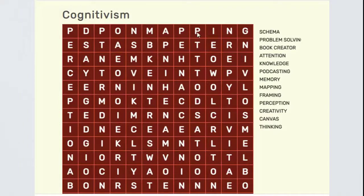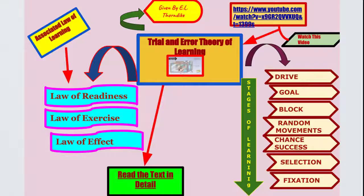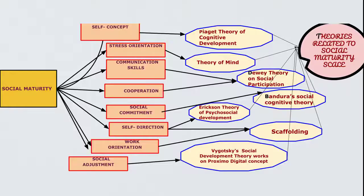As shown on screen, a crossword is a word puzzle that usually takes the form of a square or rectangular grid. The goal is to fill white squares with letters forming words or phrases by solving clues. Similarly, there are other word games like word search puzzles and memory games. Word association games and concept mapping can also be done for presenting information in a meaningful, organized way.